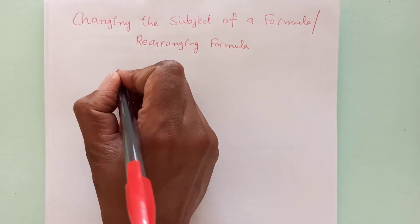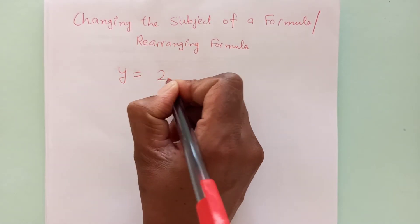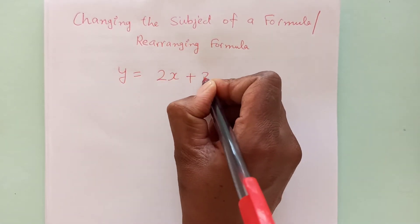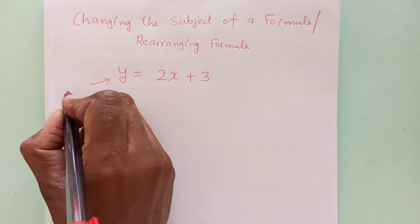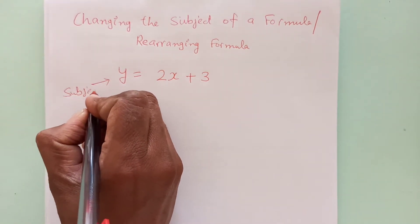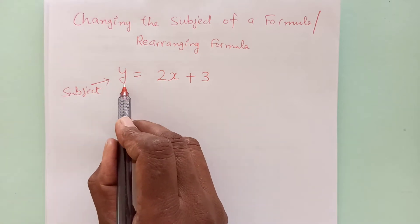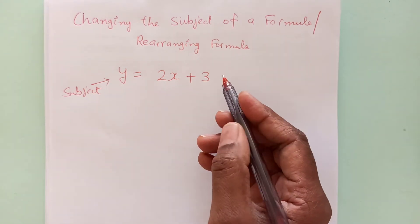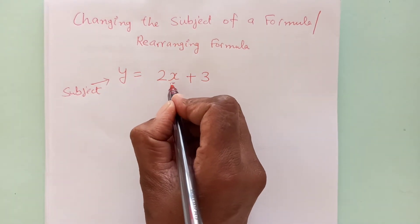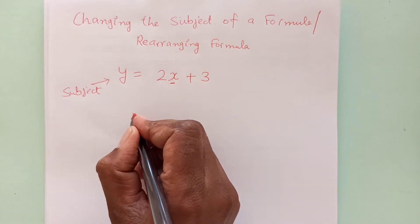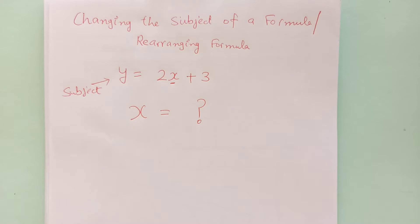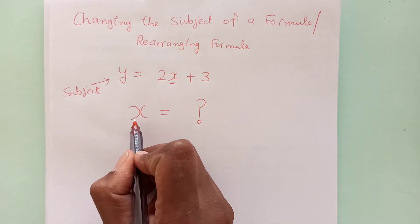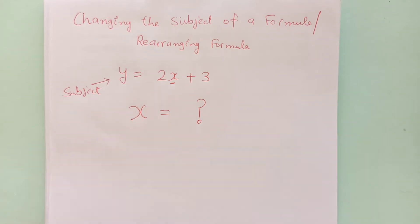For example, if we have y equals to 2x plus 3, here y is the subject — that means we have y equals to something. If we want to change the subject, that means we need x equals to something. So, to make x the subject, we need to follow certain rules. Let's see what those are.